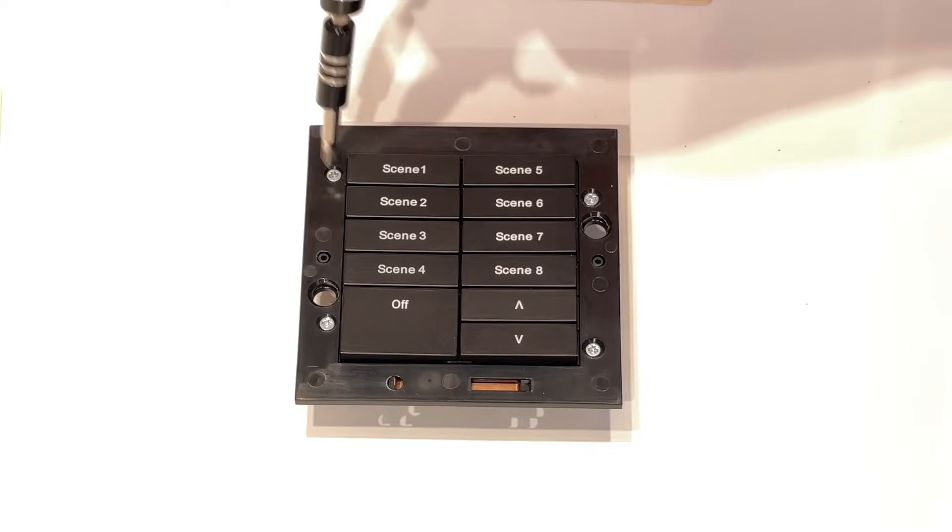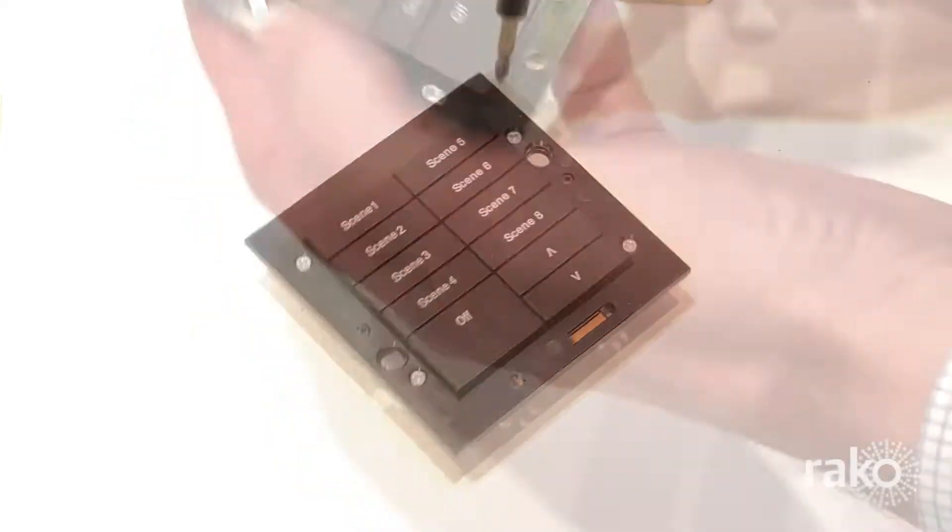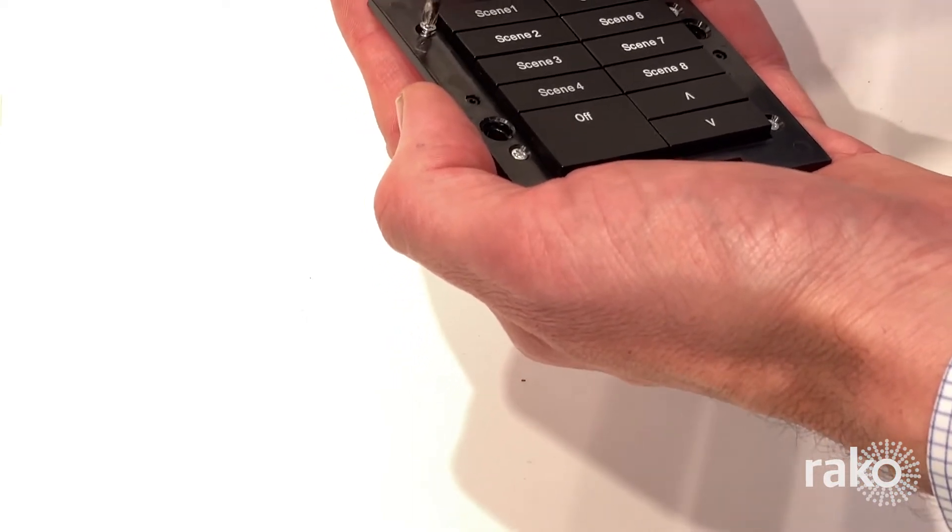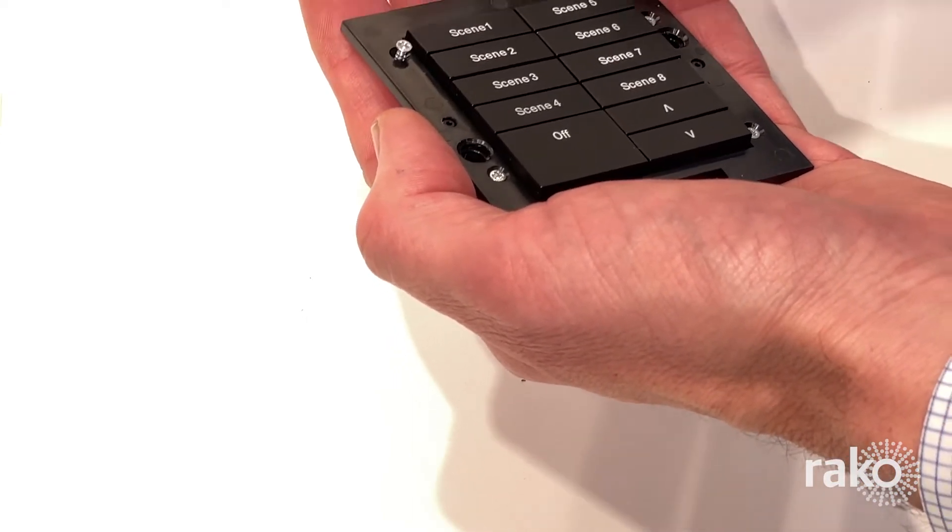The next thing you need to do is locate the four screws on the front of the module and the two on the back. Start with the four screws on the front bezel and put them carefully to one side.